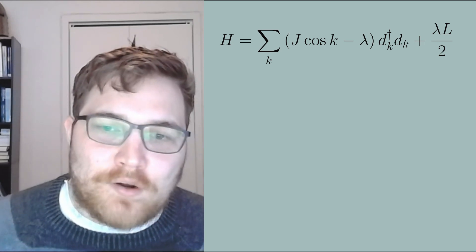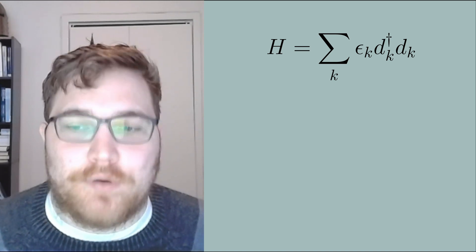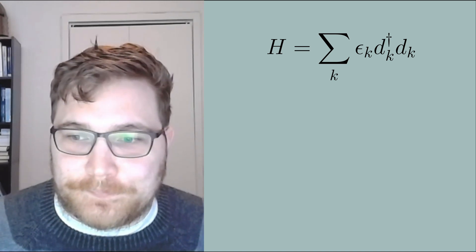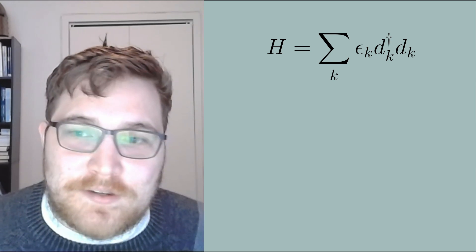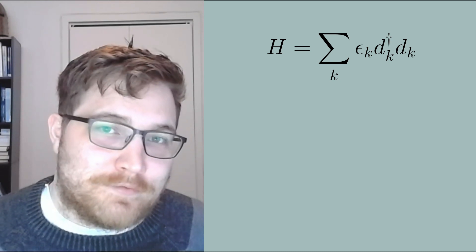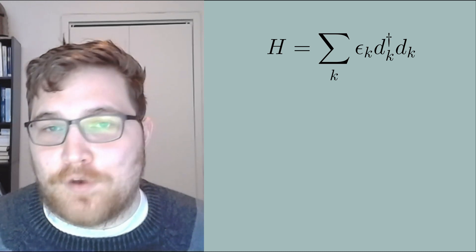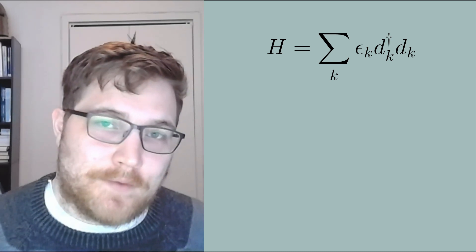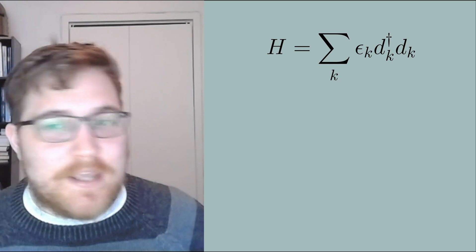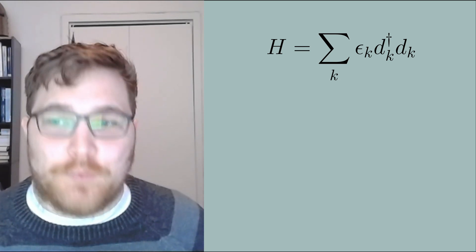So our final Hamiltonian expression is a free fermionic Hamiltonian, a non-interacting free fermionic Hamiltonian in the following expression. So we've seen an expression like this before but it's basically just telling us that we have a bunch of fermionic modes that we can put a fermion into and each fermion mode comes with a corresponding energy epsilon k.